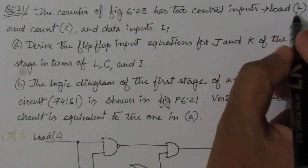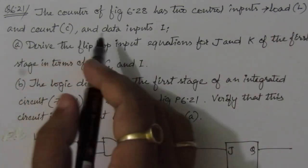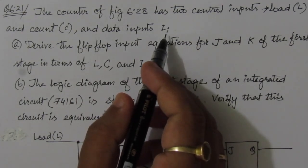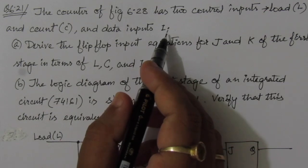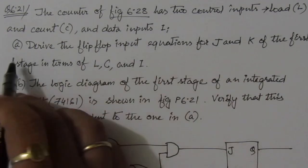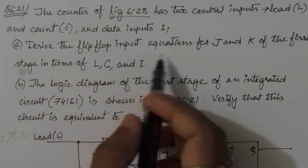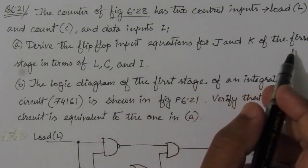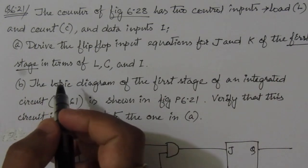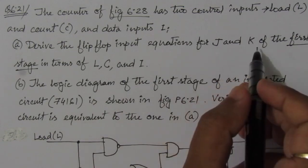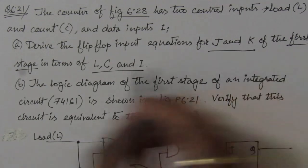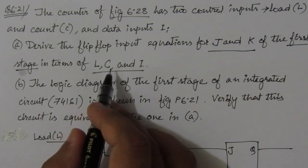The control inputs are load L and count C, and data inputs I_i, where i is the stage index — 0 for the least significant bit and 3 for the most significant bit, since this counter has 4 flip-flops and 4 inputs. In the first part we have to derive the flip-flop input equations for J and K for the first stage, finding J and K expressions in terms of L, C, and I — that is, load, count, and input.